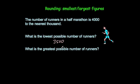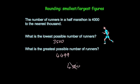What is the greatest possible number of runners in the half marathon? So that's going to be 4,499. Because we're dealing with discrete numbers here — whole numbers of runners — the greatest possible number of runners would be 4,499. 4,500 would round up to 5,000. So therefore the greatest possible number of runners in the half marathon is 4,499.